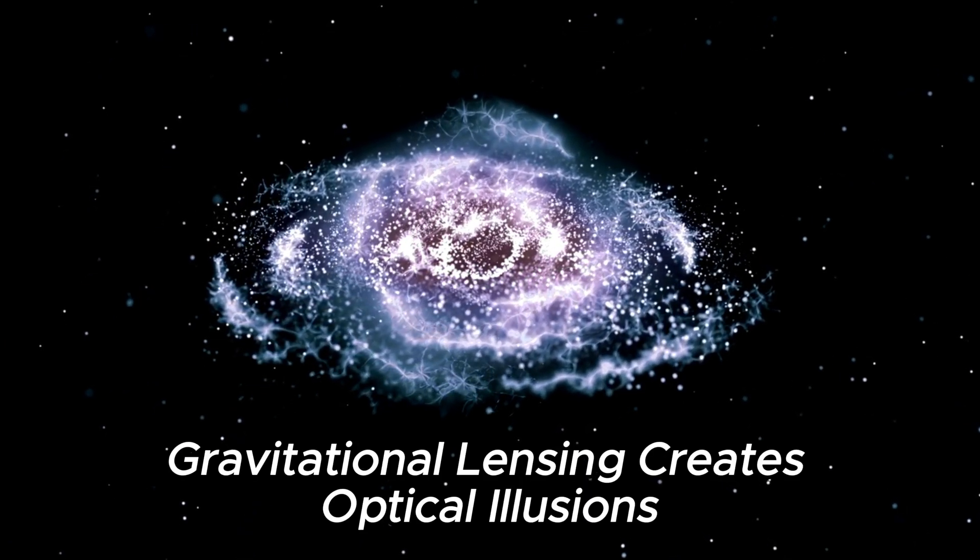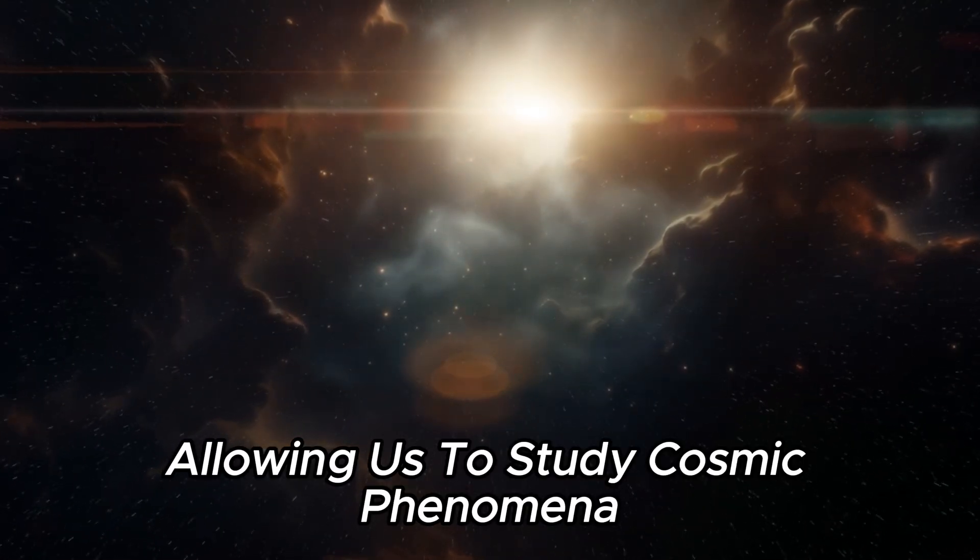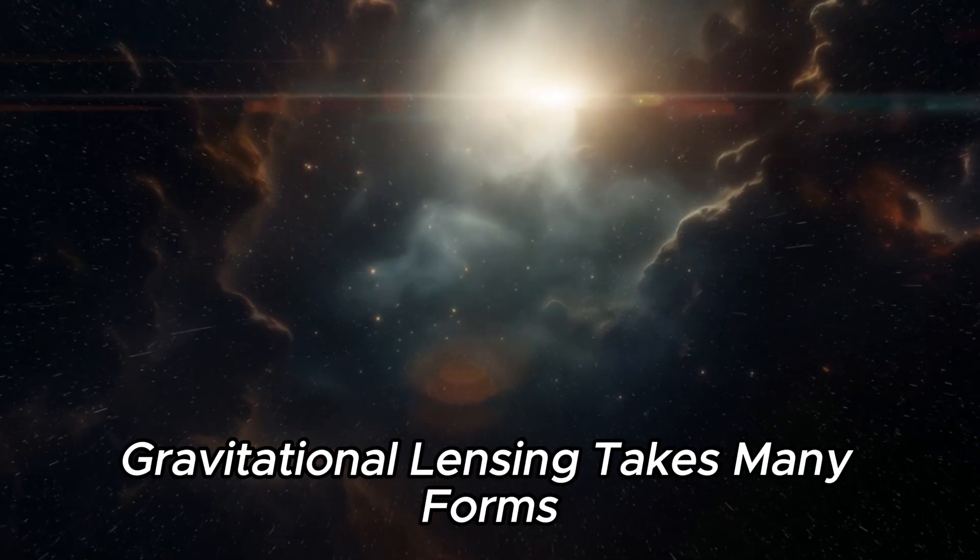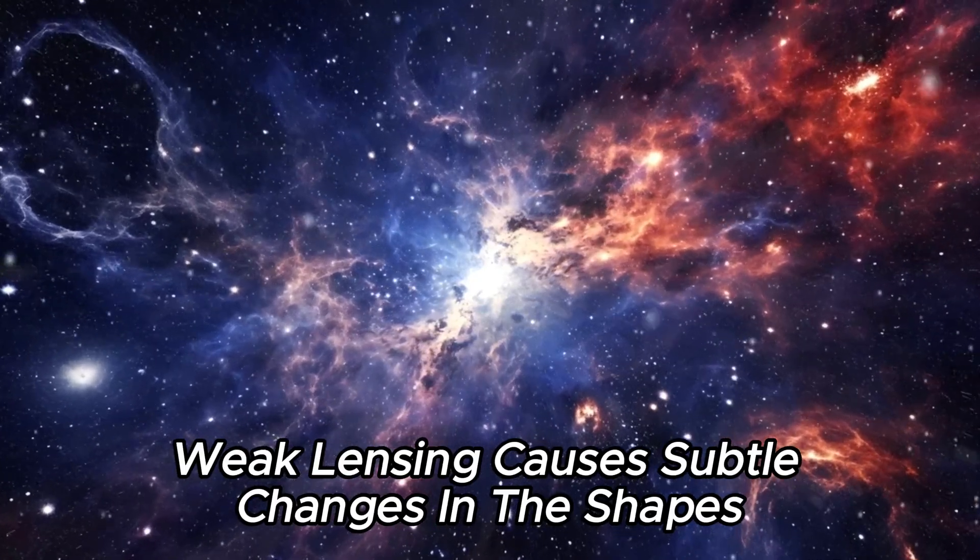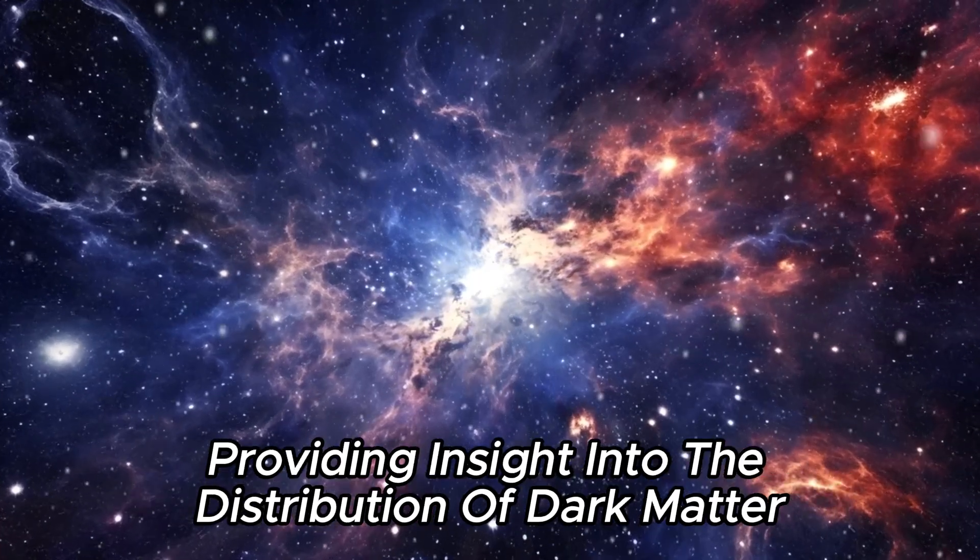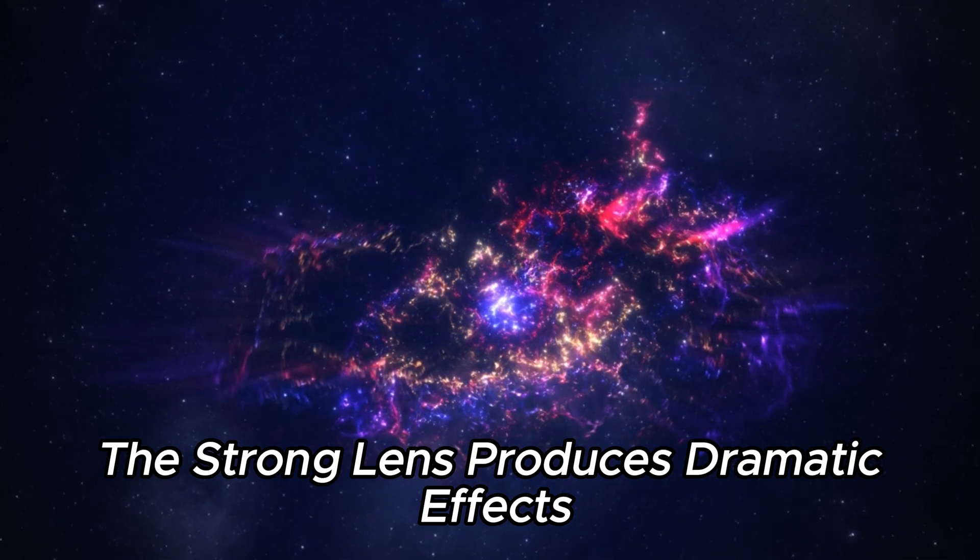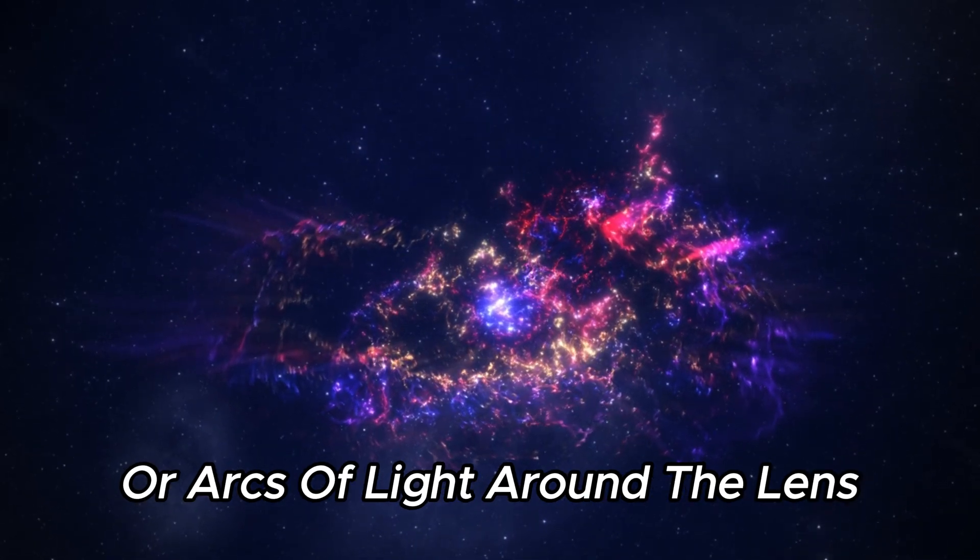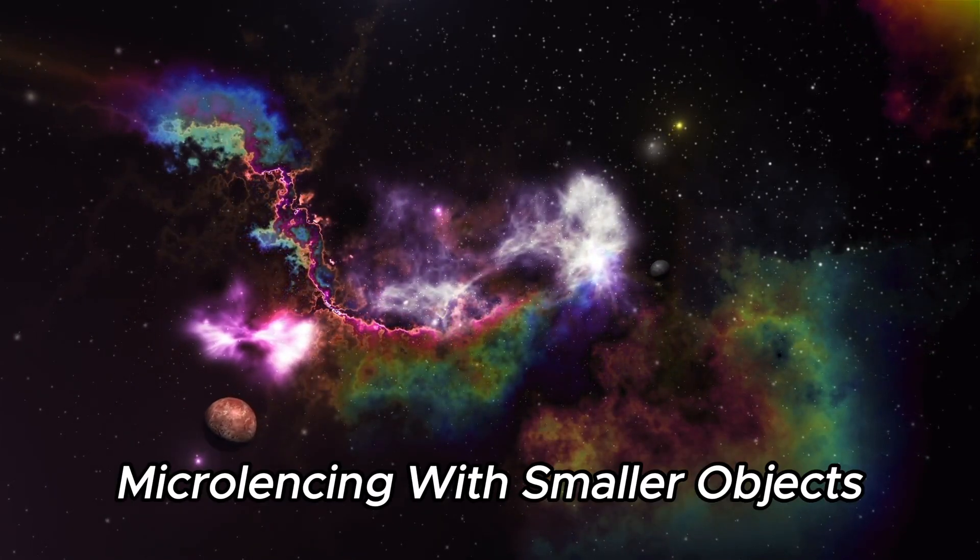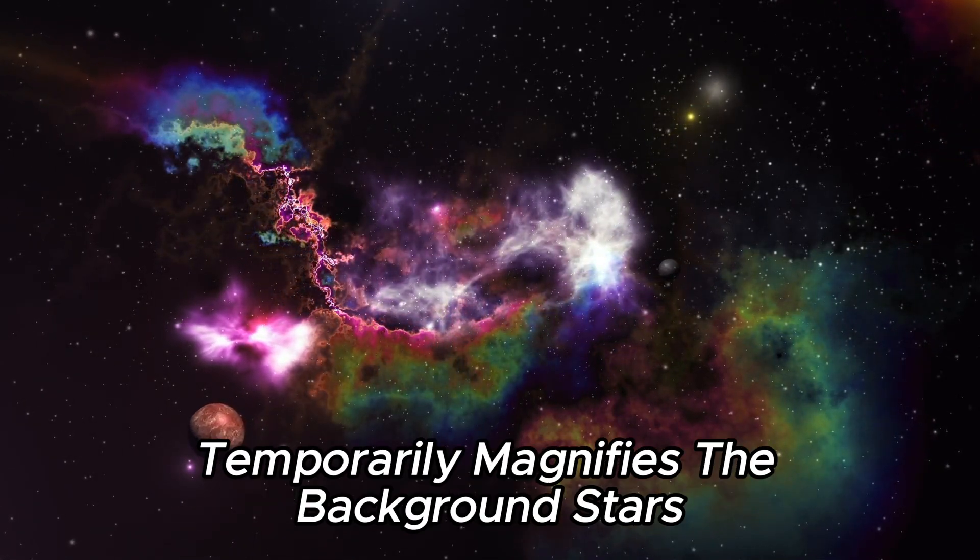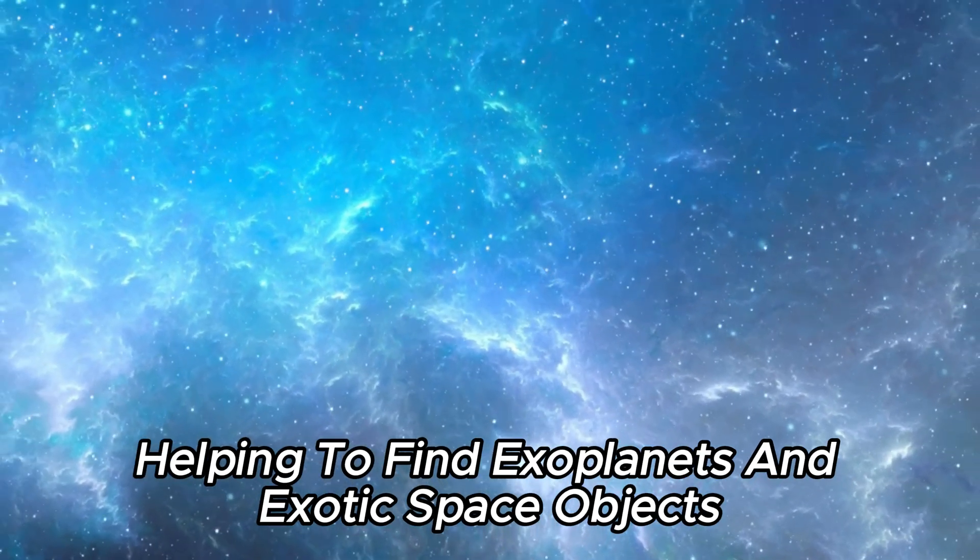Gravitational lensing creates optical illusions when massive objects bend light, allowing us to study cosmic phenomena such as black holes. Gravitational lensing takes many forms. Weak lensing causes subtle changes in the shapes and positions of distant galaxies, providing insight into the distribution of dark matter. The strong lens produces dramatic effects, such as multiple images or arcs of light around the lens, that help scientists measure its mass and shape. Microlensing with smaller objects such as stars or planets temporarily magnifies the background stars, helping to find exoplanets and exotic space objects.